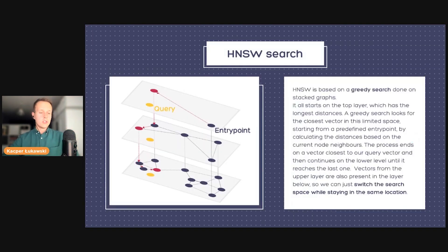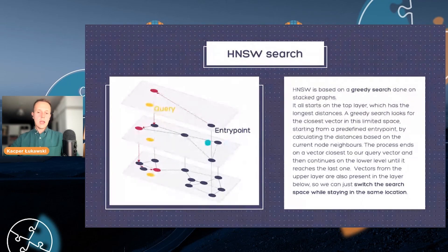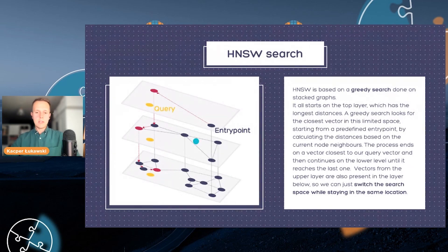So how does the HNSW search work? We start at the top layer with an entry point and try to find the closest points to the given query. Then we switch to the layer below and do basically the same process starting from the closest point from the previous layer. That goes from layer to layer — there may be many layers stacked on each other. This actually performs a similar process to B-trees or B+ trees in other indexes in relational databases.